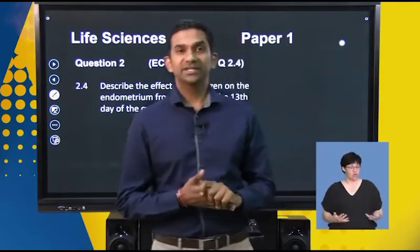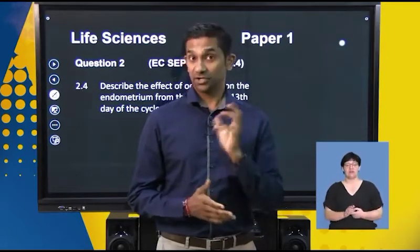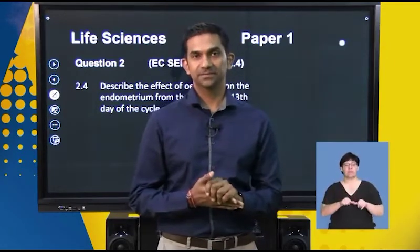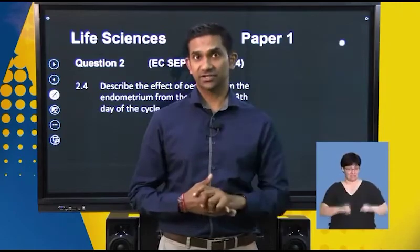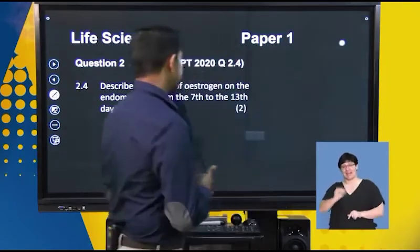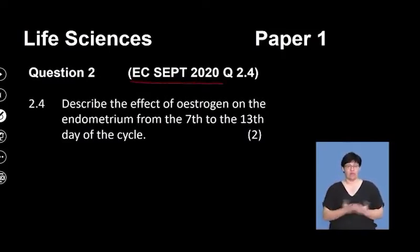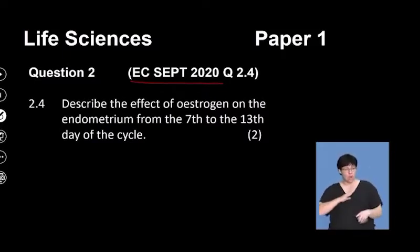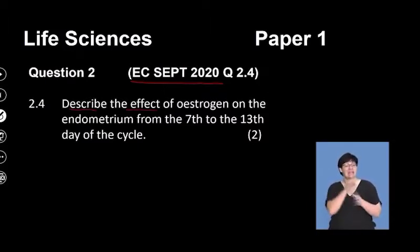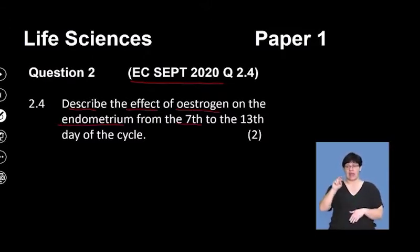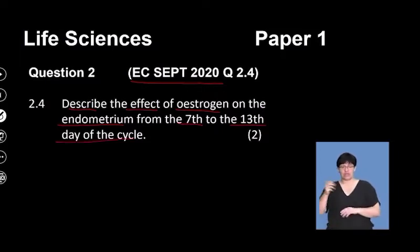We're back into the second segment of this session. We're going to continue with the female reproductive system and look at a few more questions. This question was taken from a paper written in the Eastern Cape in 2020. Expose yourself to many different questions from different examining boards. The question requires us to describe the effect of estrogen on the endometrium from the 7th to the 13th day of the cycle.